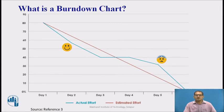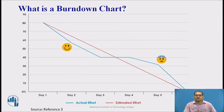A Burndown Chart is a graphical representation of work left to do versus time. It is often used in Agile Software Development Methodology, such as Scrum. However, Burndown Charts can be applied to any project containing measurable progress over time.